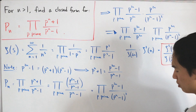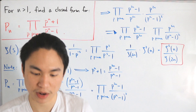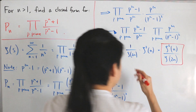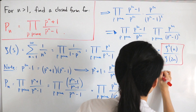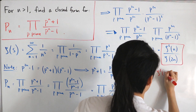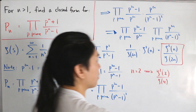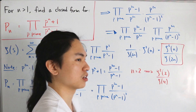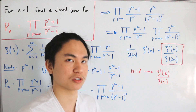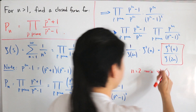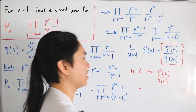With that done, let's plug in the n equals 2 case. That gives ζ(2)² divided by ζ(4). We know ζ(4) equals π⁴ over 90 — a proof is linked in the description — and ζ(2), the Basel problem, equals π² over 6. Squaring ζ(2) gives π⁴ over 36.